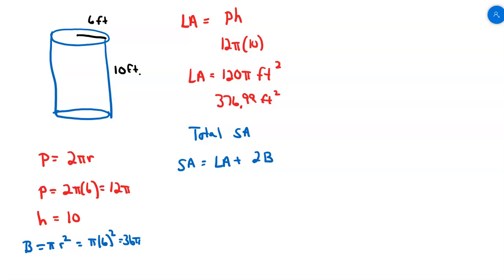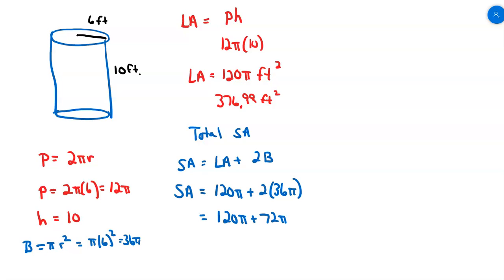I'm adapting the prism formula to cylinders because they're the same types of objects — they have bases in parallel planes and a surface that goes around them. My surface area is 120 pi for the lateral area, plus 36 pi times 2 equals 72 pi for both bases. Adding them together gives 192 pi square feet.